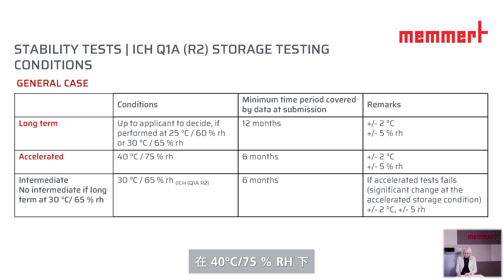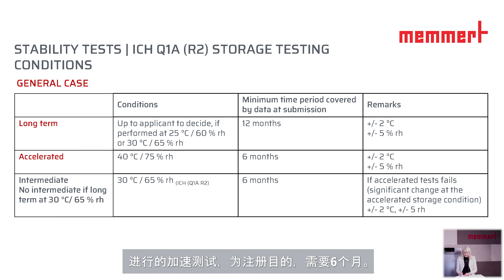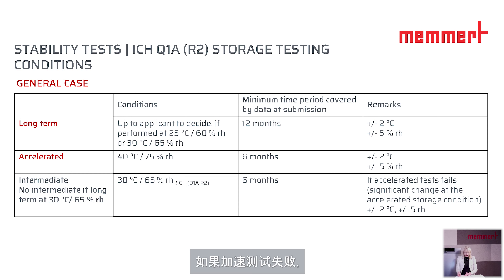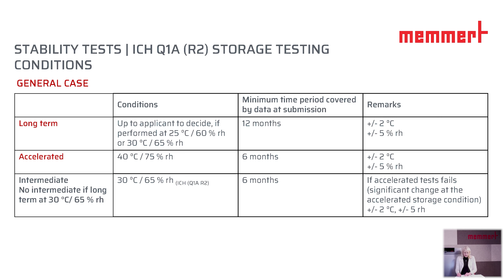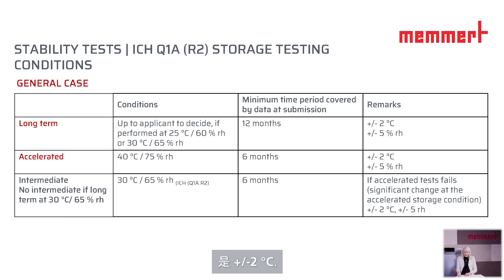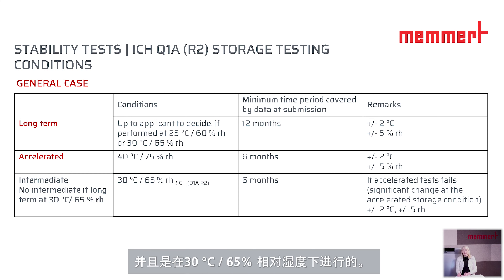Accelerated testing is done at 40°C and 75% RH for six months for registration purposes, with tolerances of ±2°C and ±5% RH. Intermediate testing comes into effect if the accelerated test fails and long-term testing is done at 30°C and 65% RH, also with a tolerance of ±2°C.